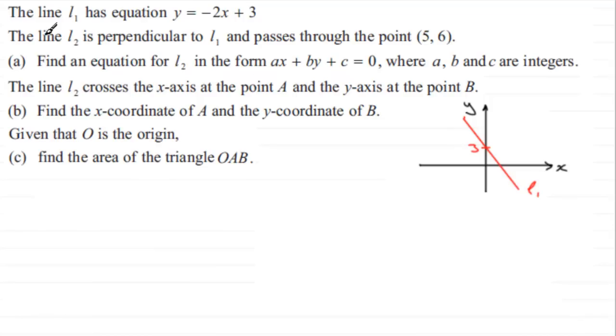Next we've got this line L2 which is perpendicular to L1 and it passes through the point (5,6). Let's assume that the point (5,6) is 5 across and 6 up, about here. We've got our line L2 then which is perpendicular to L1, so it looks from this sketch that it's going to be something like that. We'll label that as well L2.